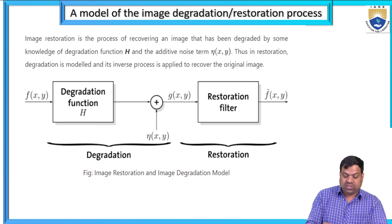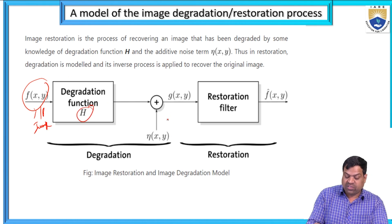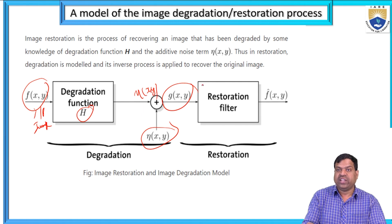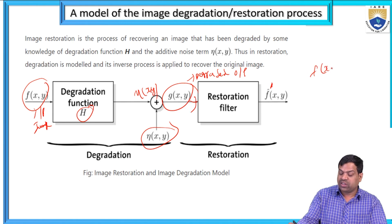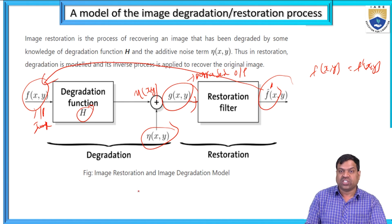For example, f(x,y) is the input or original image. The degradation function is h, and where h causes noise to occur. g(x,y) is the degraded output, which is the input for the restoration filter. The restoration filter outputs f'(x,y). Finally, f(x,y) = f'(x,y) because this output is restored with the original image — that is the restoration process.